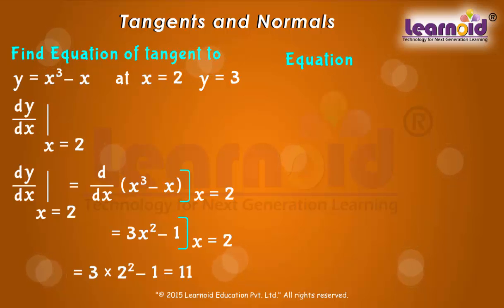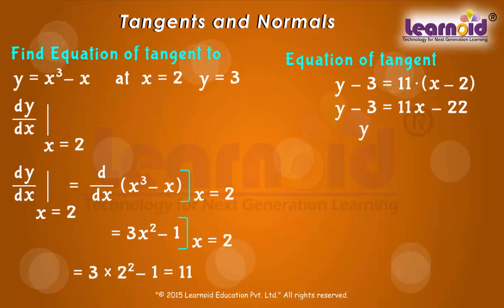Now the equation of tangent line passing through (2, 3) is y - 3 = 11(x - 2). Solving we get y = 11x - 19.